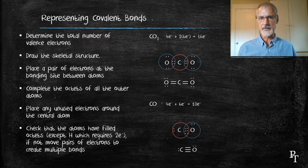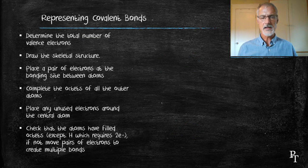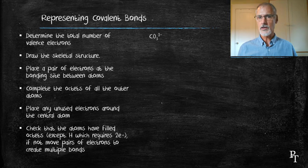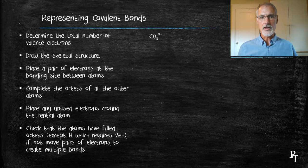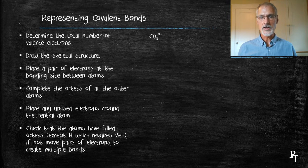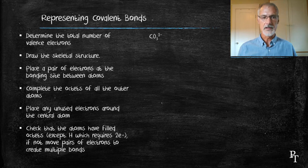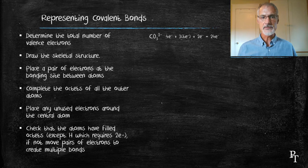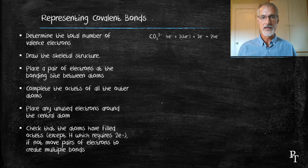We can also draw ions using this technique. Here I have the carbonate ion. You may recall this from ionic compounds. The bonding within the carbonate itself is covalent in nature, but the bond between carbonate and say a metal is ionic in nature. Anyway, total up my electrons. The presence of the two minus indicates there's two extra electrons that I have to add to my total. As a result, I have 24 electrons to place.